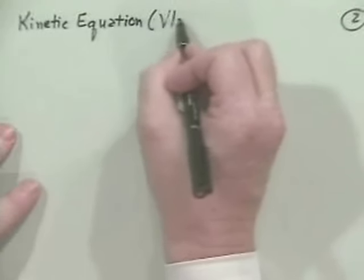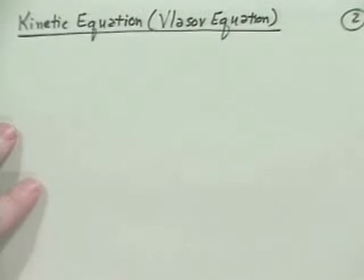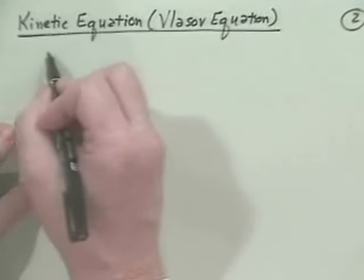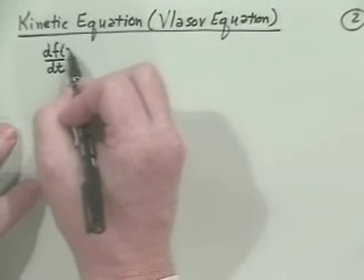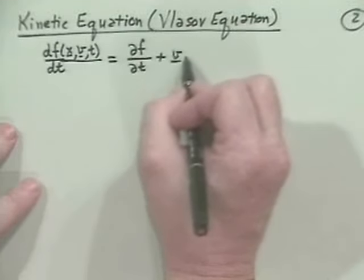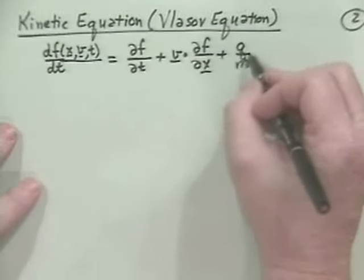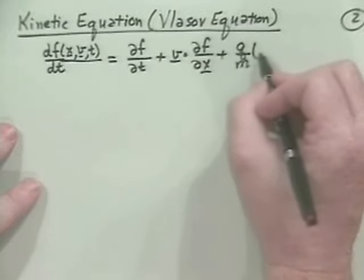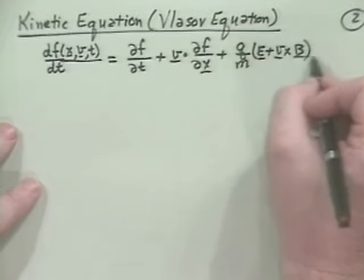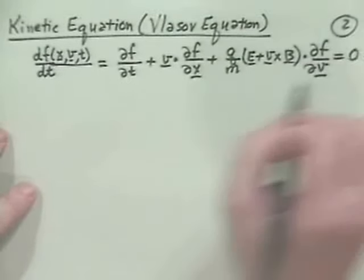What do we need for our kinetic equation? We're most interested in the Vlasov, or collisionless, kinetic equation. Writing it out: Df/Dt = 0, where f is a function of x, v, and t. This expands as ∂f/∂t + v · ∂f/∂x + (q/m)(E + v × B) · ∂f/∂v = 0, because it's a collisionless situation.